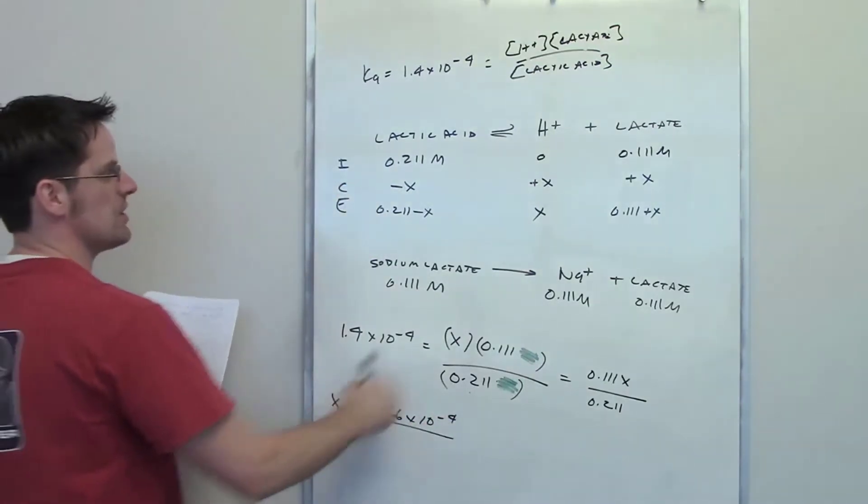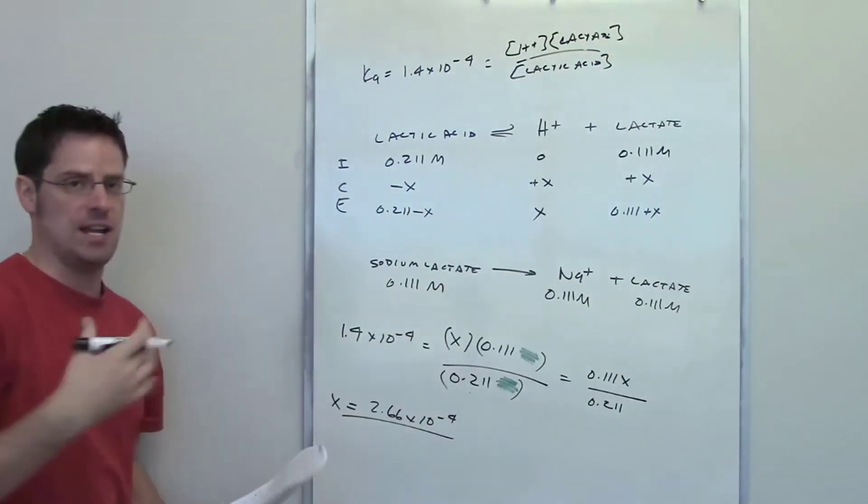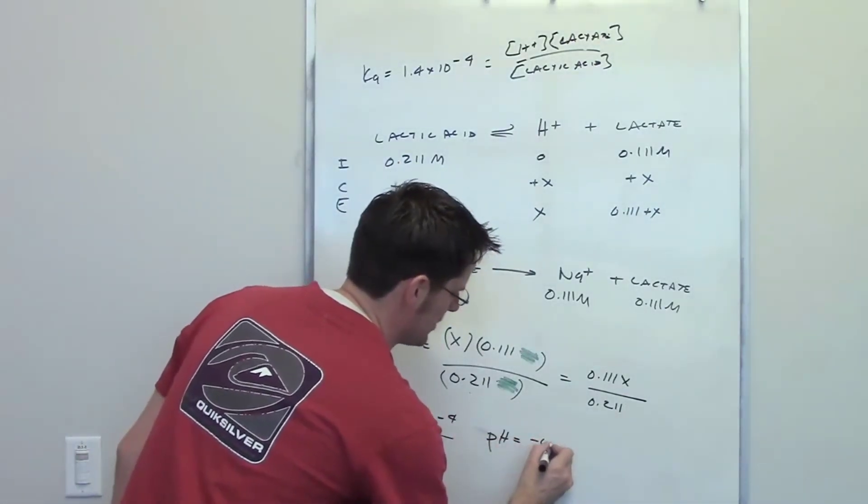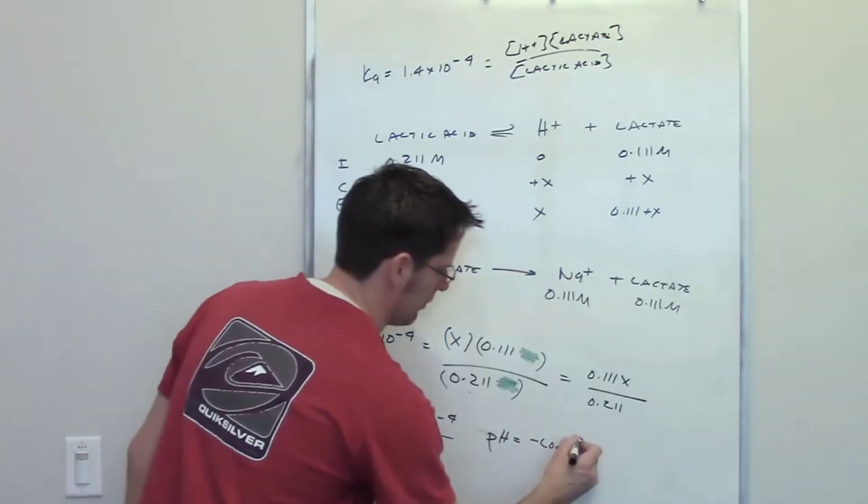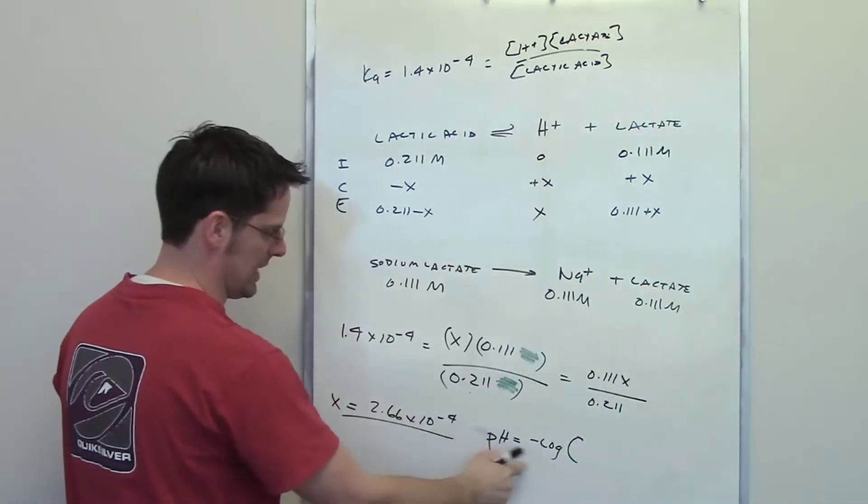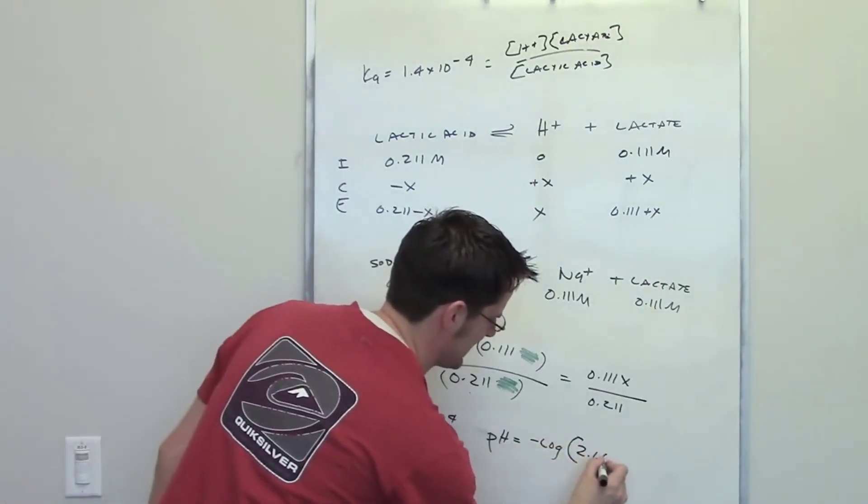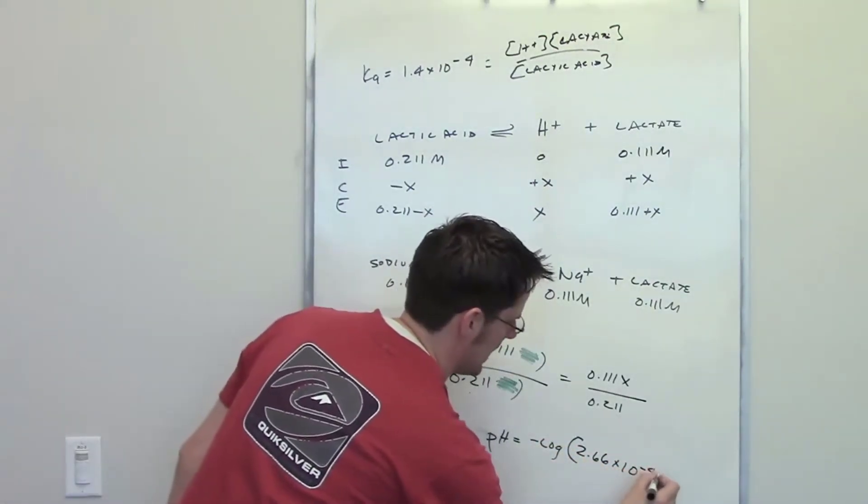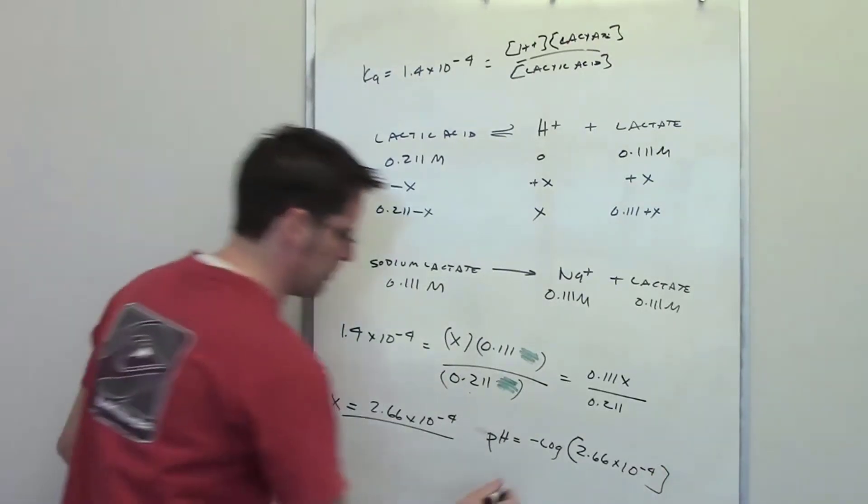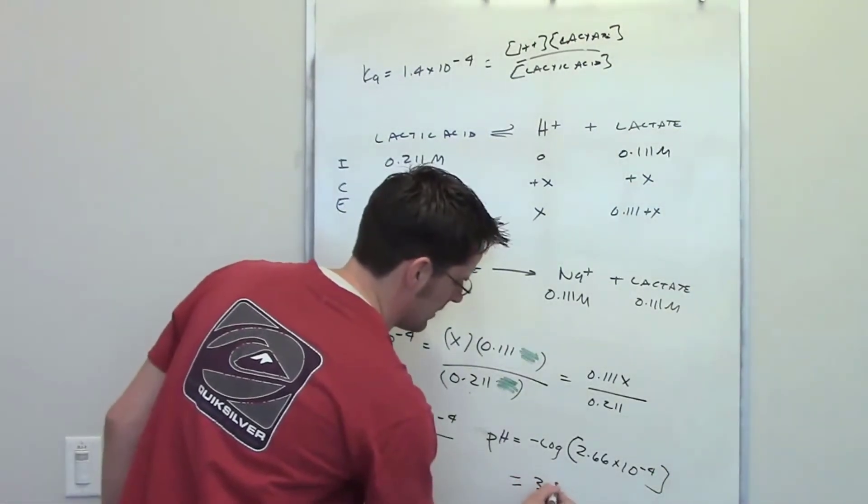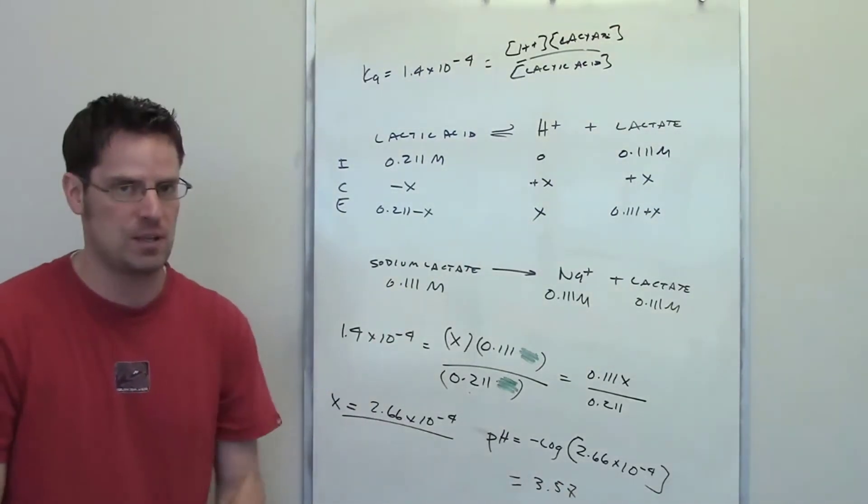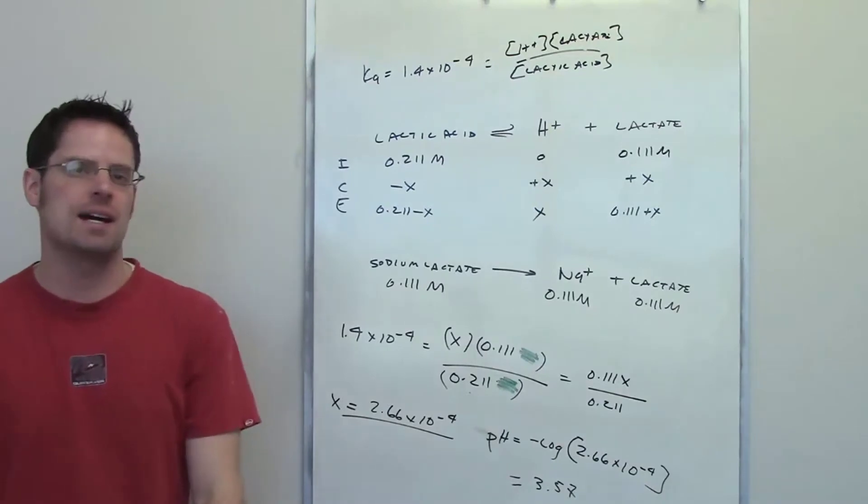X is the equilibrium concentration of H+. So what is the pH? Well, there exists our familiar old pH equation. pH is equal to the negative log of the concentration of H+. In other words, it's going to be equal to the negative log of 2.66 times 10 to the negative fourth. I throw that into my calculator. I end up getting a final pH of 3.57. This is a way of solving for pH by using the common ion effect approach that requires us to make an ice table.